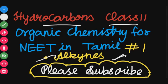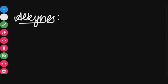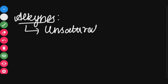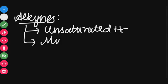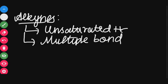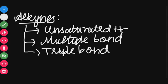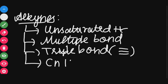We are going to talk about Alkynes. Alkynes are unsaturated hydrocarbons because they have multiple bonds — specifically, triple bonds. The general formula for alkynes is CₙH₂ₙ₋₂, where N starts from 2 and goes up to infinity.